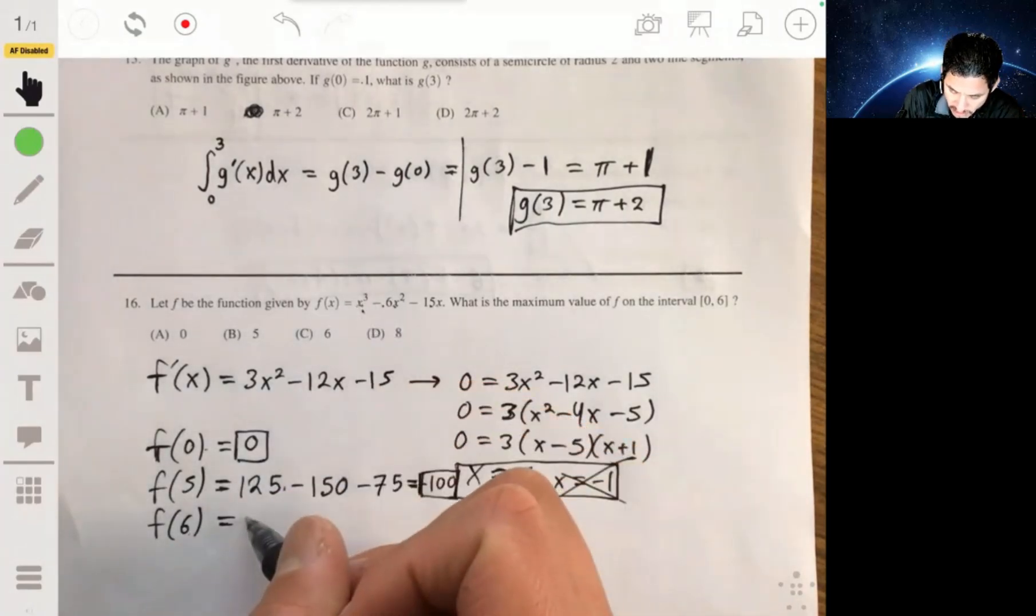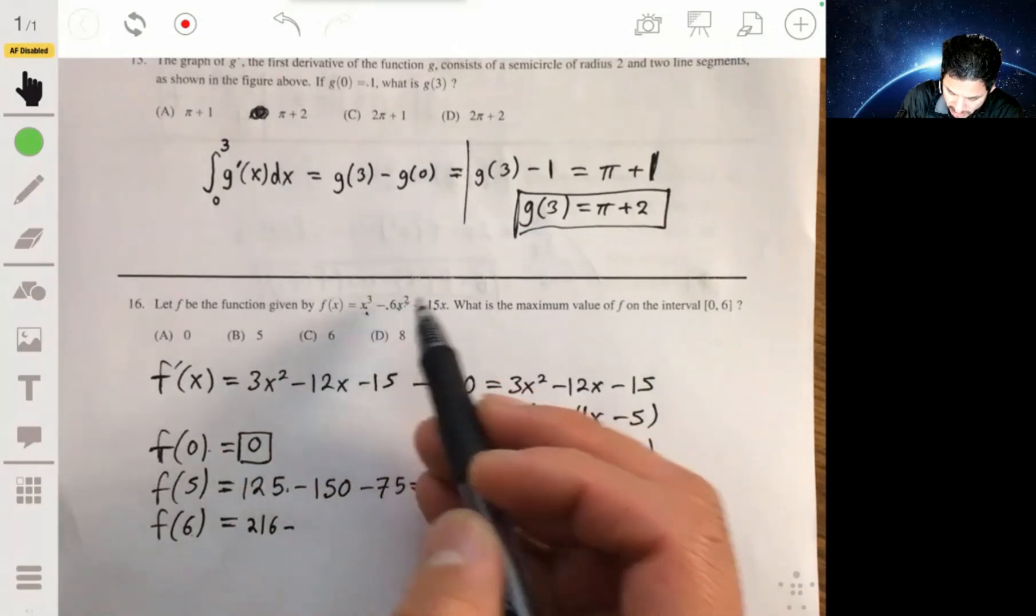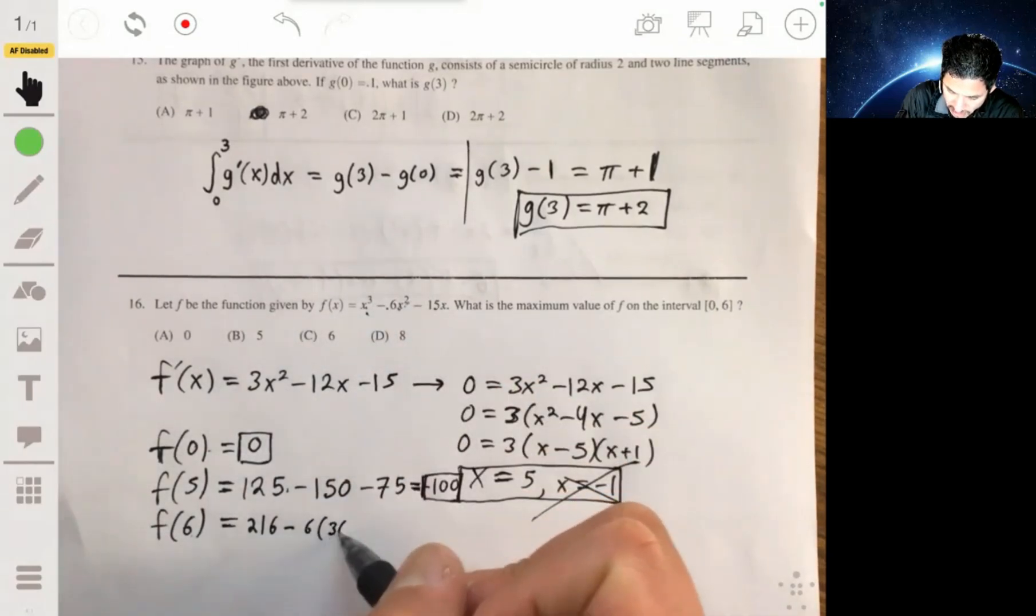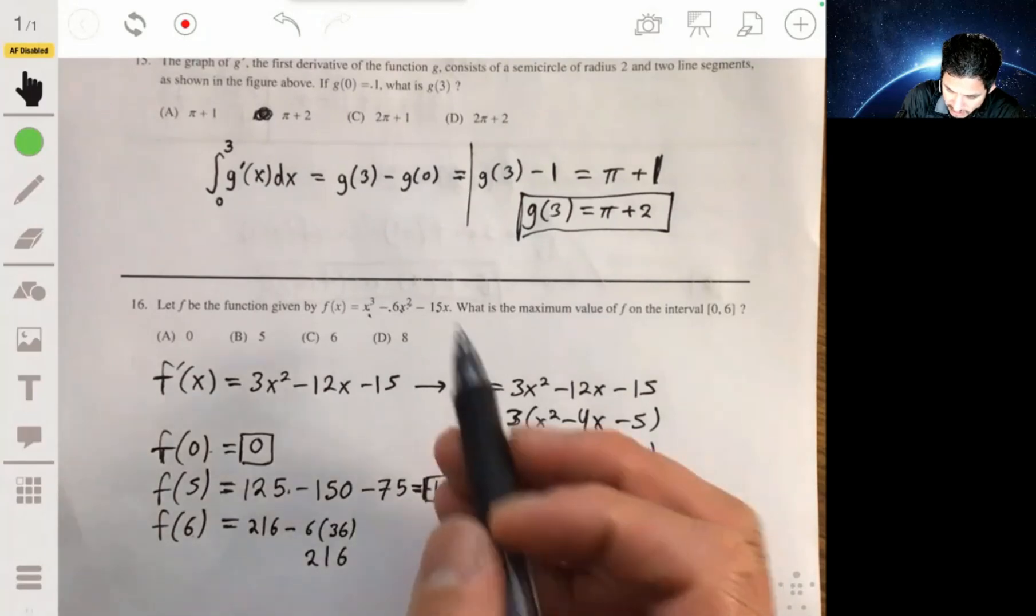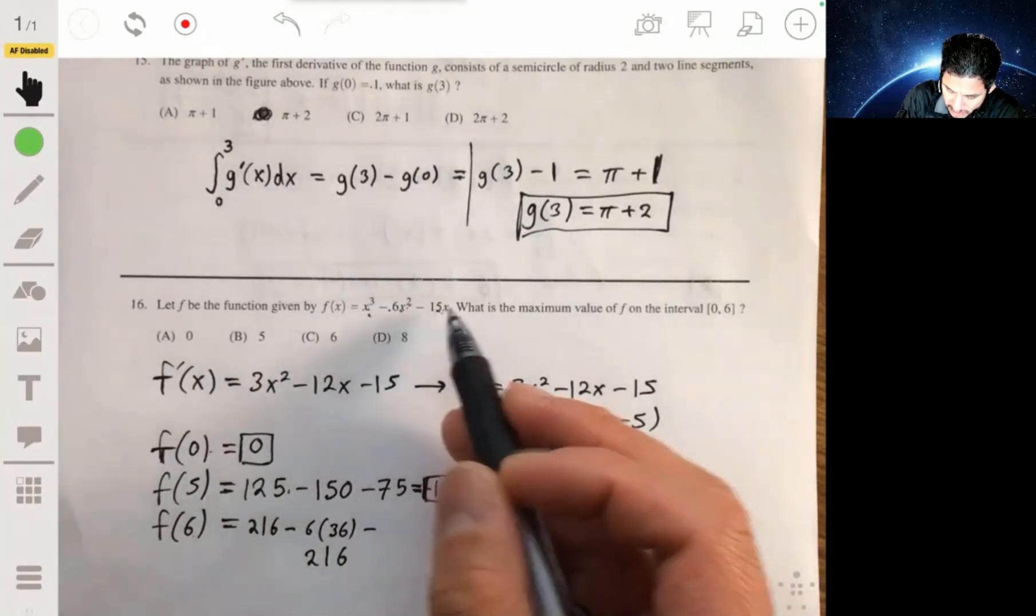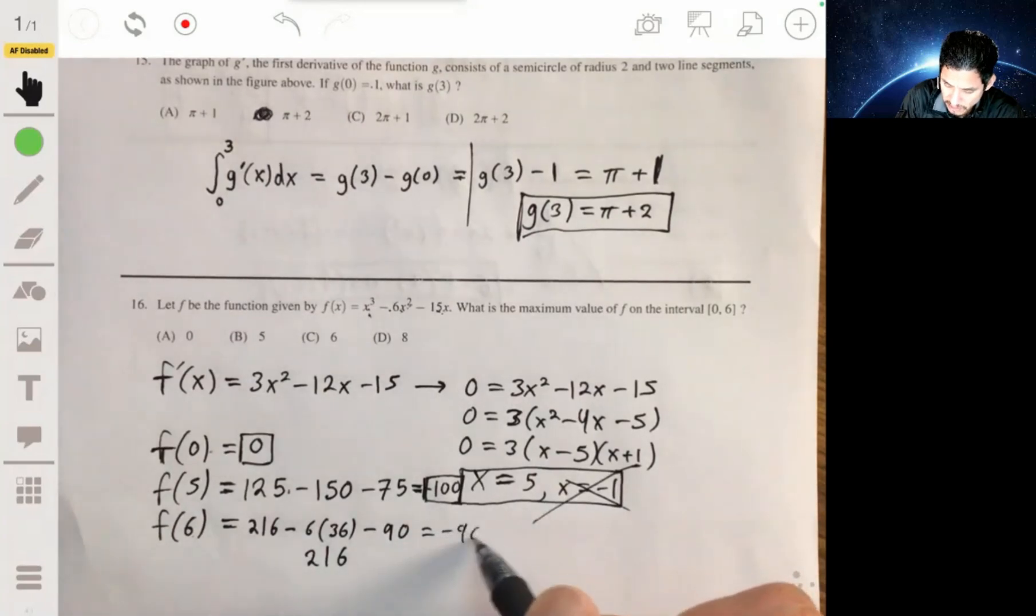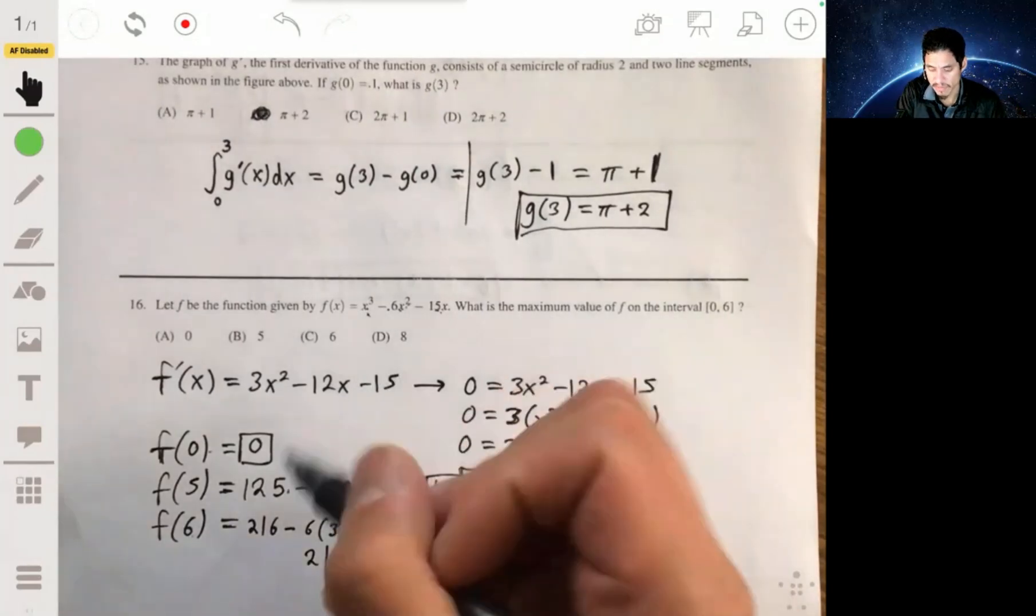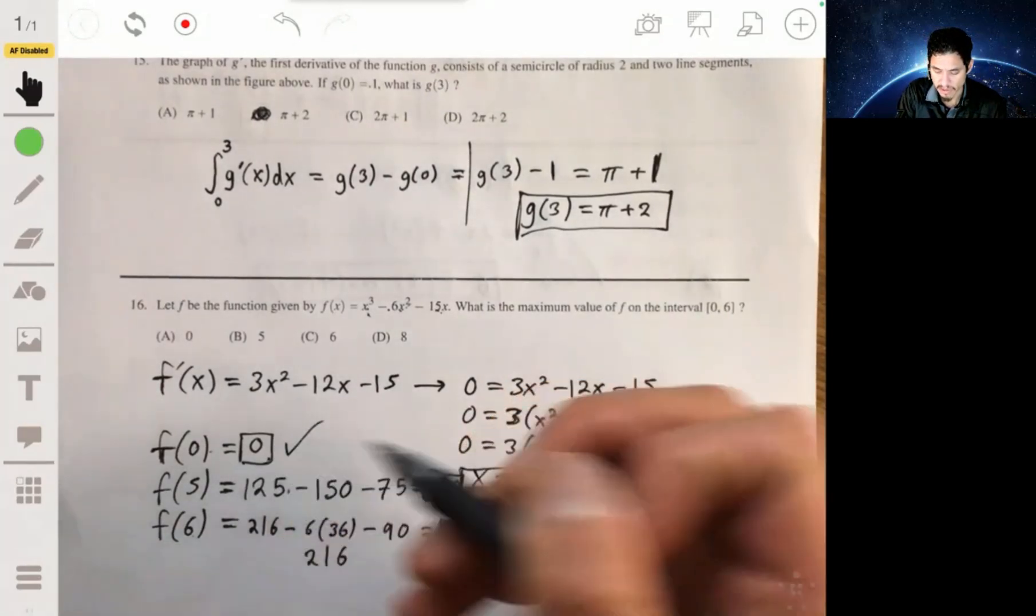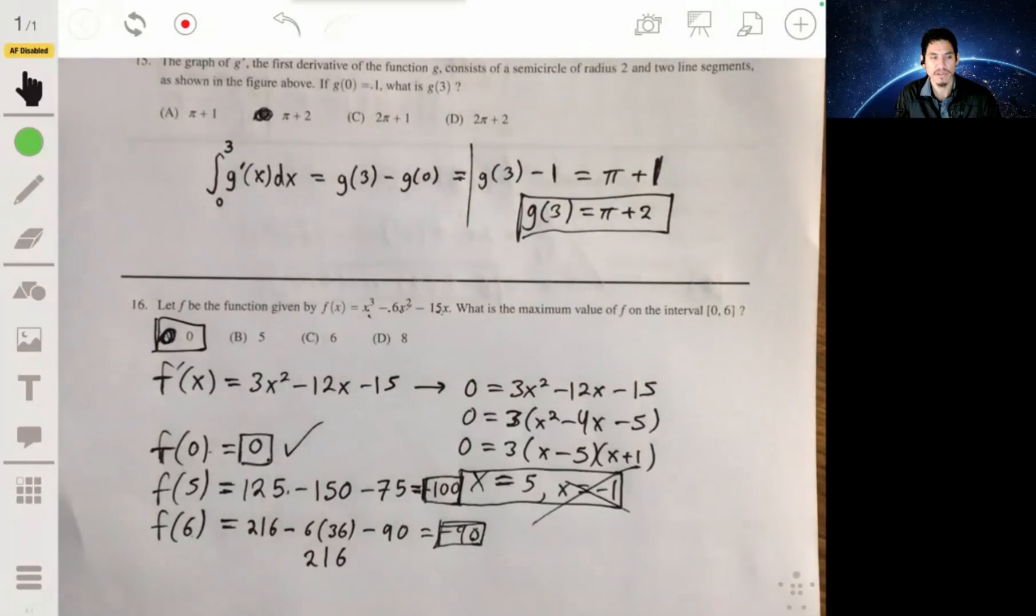So 6 cubed, 216, minus 6 times 6 times 6, remember 6 times 36, which is still 216. So it's 216 minus 216 minus 15 times 6, which is 90. So you get negative 90. So then the maximum value will be this one, 0, because both of these are negative. And so your answer will be A.